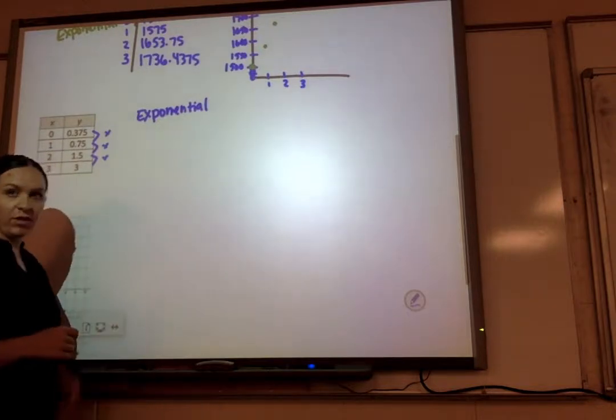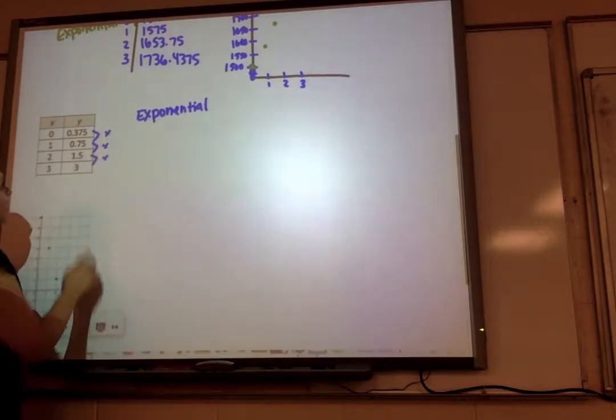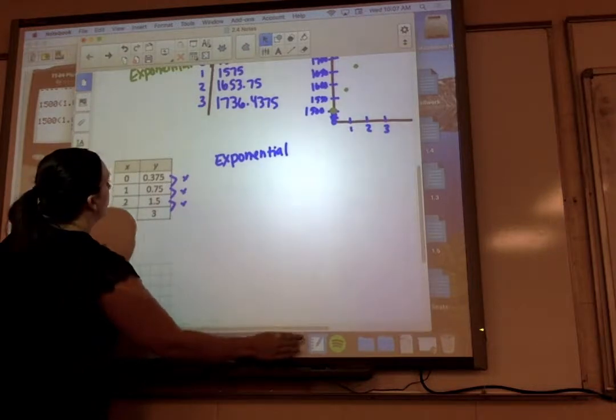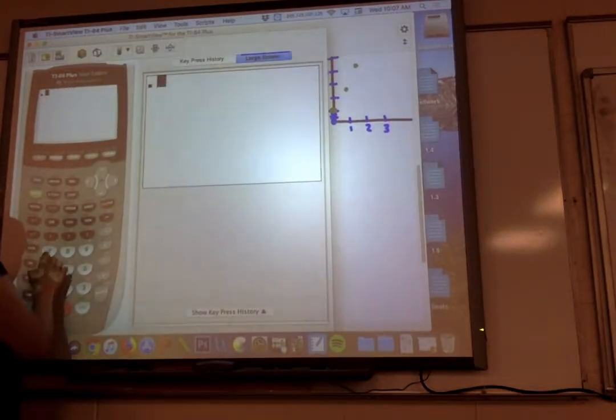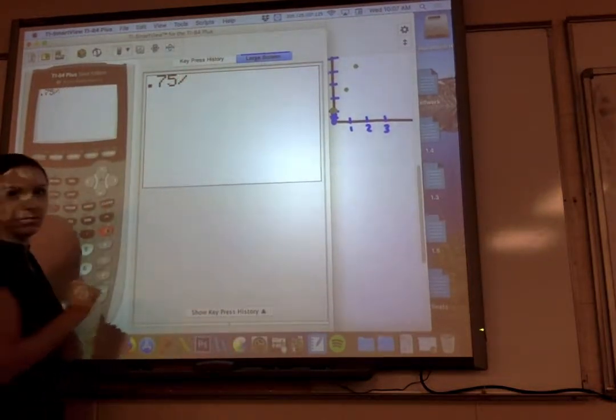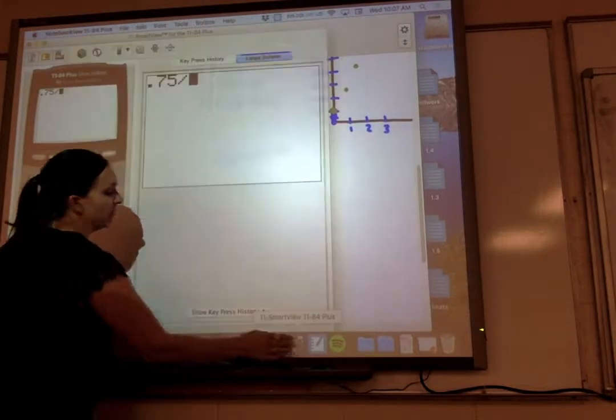To figure out what I'm multiplying by, I make my second value, 0.75, and I divide it by my first value, 0.375.